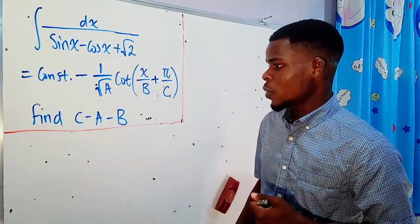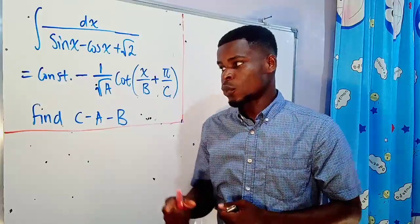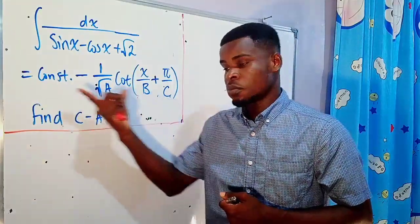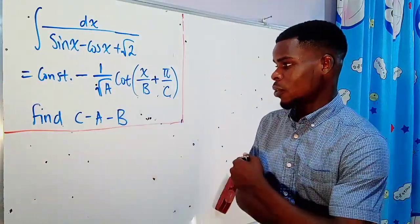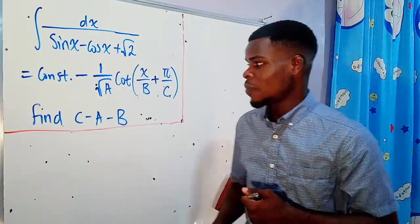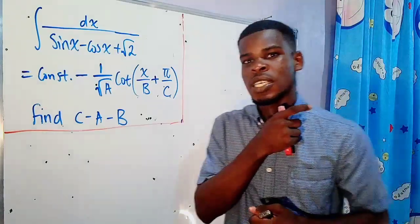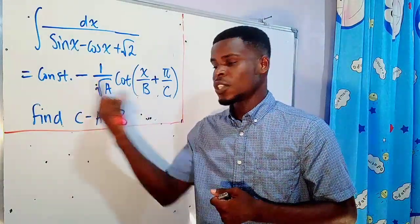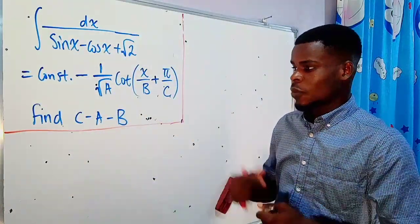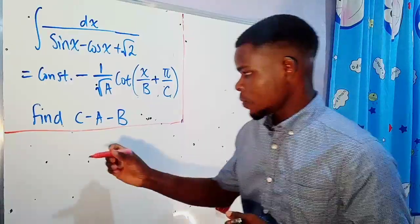We can start by integrating this function and then compare the result with the given integral form, where a, b, and c are unknowns. Alternatively, in some cases it is easier to differentiate the given integral — the derivative of that integral will give us the integrand, and in the process we will identify a, b, and c.